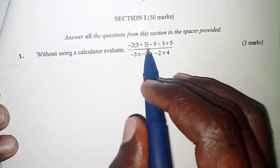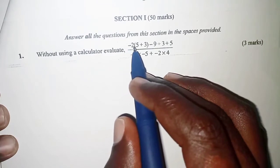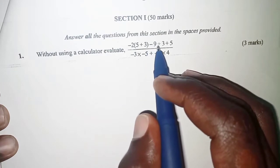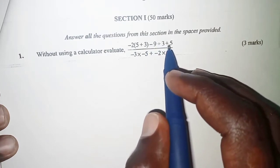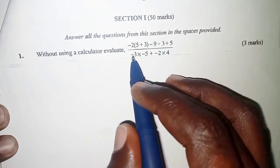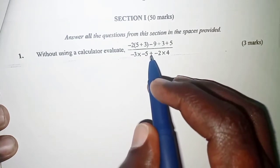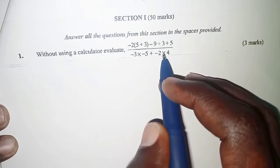then the numerator, negative 2 into brackets, 5 plus 3, close the bracket, minus 9, divide by 3 plus 5, all over negative 3 times negative 5, plus negative 2 times 4.